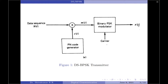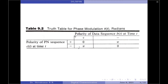The transmitted signal, denoted by X(t), is therefore a direct sequence spread binary phase shift keying signal. The phase of the transmitted signal, theta(t), has one of the two values 0 or pi, depending upon the polarities of the data sequence b(t) and the PN sequence c(t), as per the table shown here.